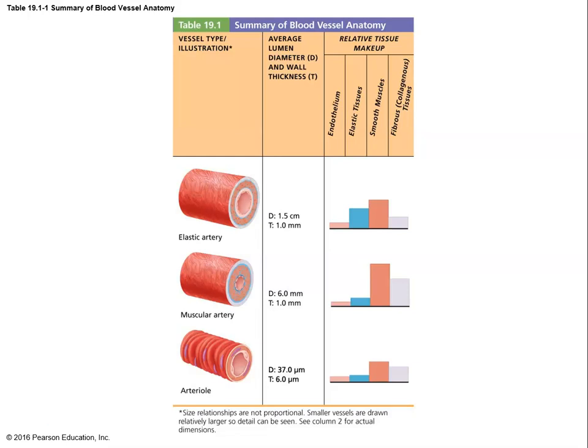Muscular arteries get smaller, with more smooth muscle and less elastic tissue. Their job is not to expand and contract but to maintain a relatively fixed diameter, which helps maintain blood pressure as you get farther away from the heart. So elastic arteries adapt to blood pressure changes, while muscular arteries maintain blood pressure by being relatively inflexible.